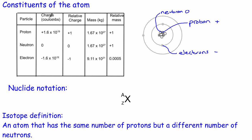This table sums up some of the properties of these three particles: proton, neutron and electron. When you were at GCSE you worked in terms of the relative charge and the relative mass, and they're relative simply because they're relative to the proton — everything is compared to the proton. So the proton, if you compare it to itself, will have a mass of one and a charge of positive one.